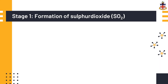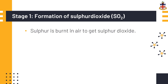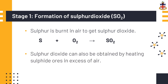In the first stage, sulfur is burned in air to get sulfur dioxide. The chemical equation shows that one mole of sulfur reacts with one mole of oxygen to produce one mole of sulfur dioxide. Sulfur dioxide can also be obtained by heating sulfide ores in excess air. For example, iron pyrite reacts with oxygen to produce iron(III) oxide and sulfur dioxide.